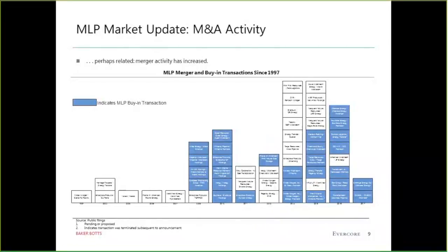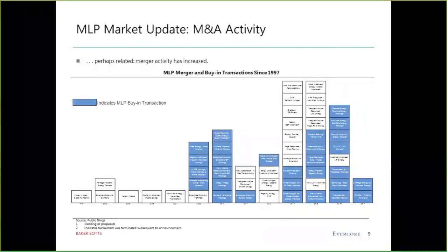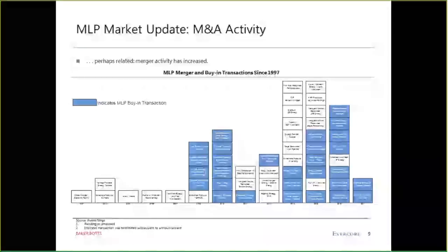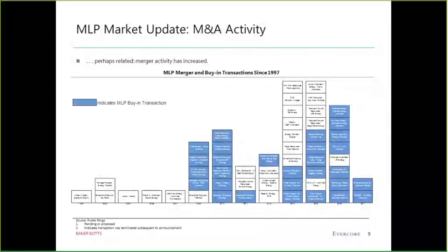Then we saw GP IPOs — the general partner going public — followed by simplifications where the GP take was getting higher relative to cash flows. Companies said they'd simplify, buy in the GP, lower their cost of equity with a lot of capex still to spend. That's where you see the 2009–2010 simplification transactions. Then as we got into 2015, capex spend in North America became less, growth became more challenged, and M&A activity increased as a result.